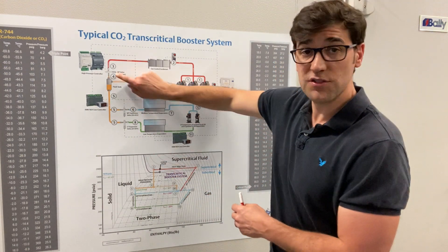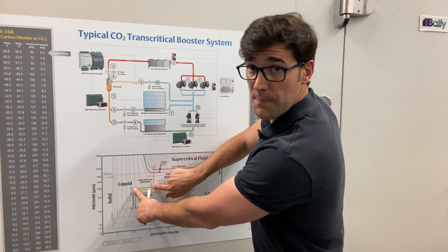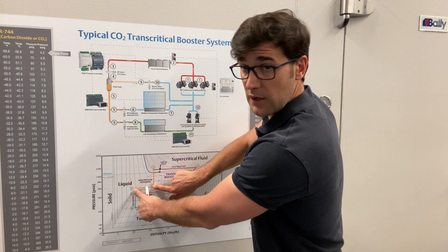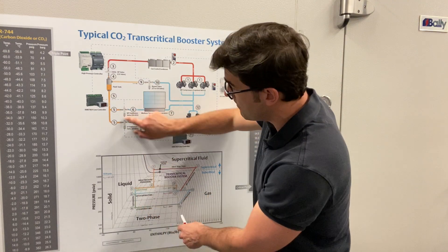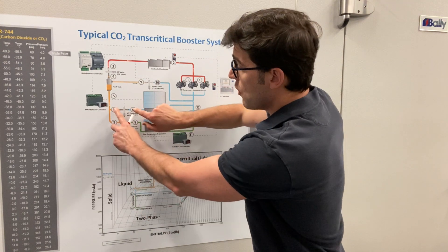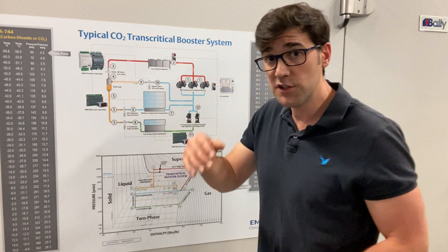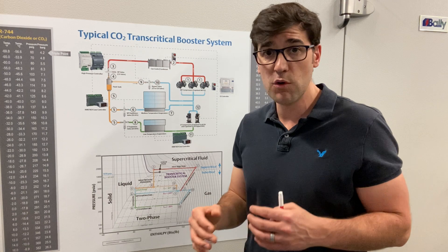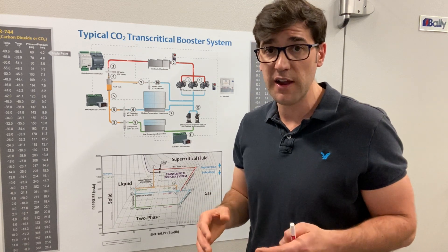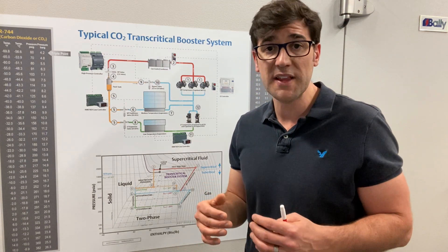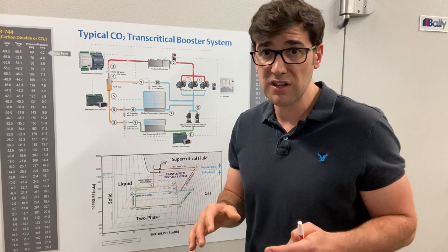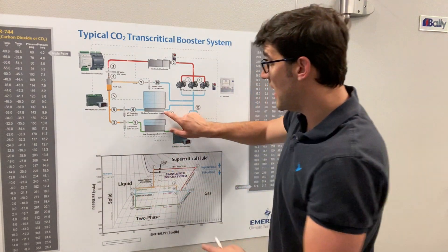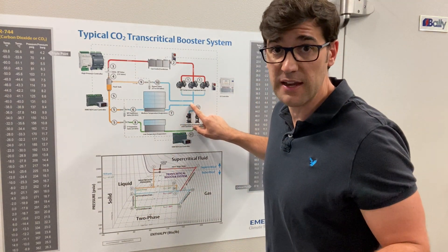Out of the flash tank, we go from four to five — moving inside our enthalpy diagram curve out to the liquid line, so now we have liquid feeding the medium temp. From five to six, it reduces the pressure: we're dropping from 500 psi down to about 400 psi, which is around 20°F, or 34 bar down to about 27 bar. We then go through the medium temp evaporator from six to seven, and back into the medium temp suction.